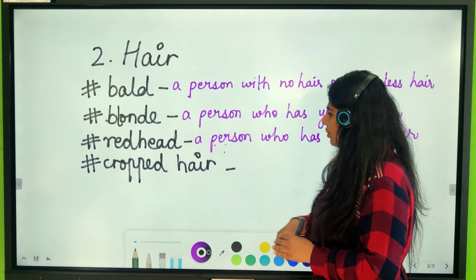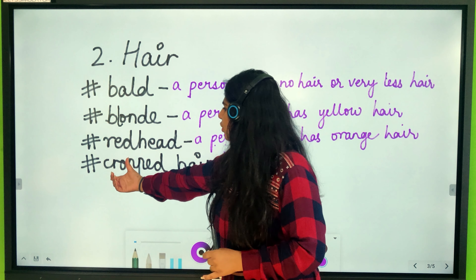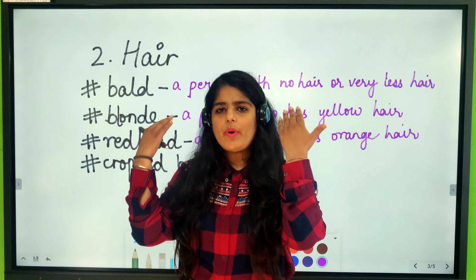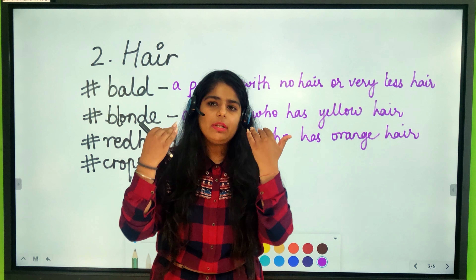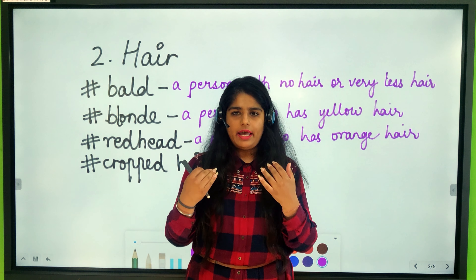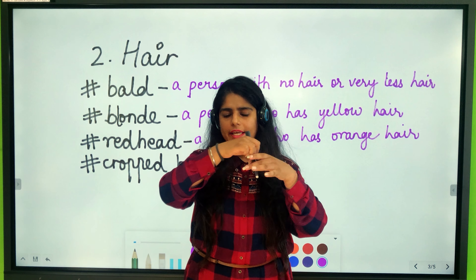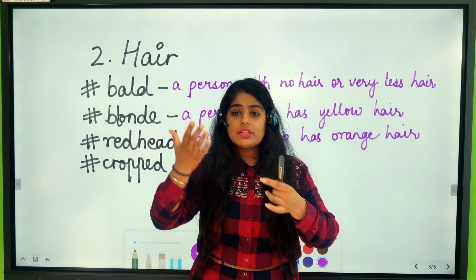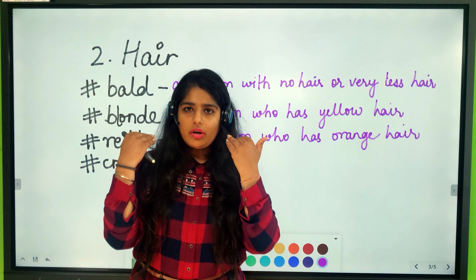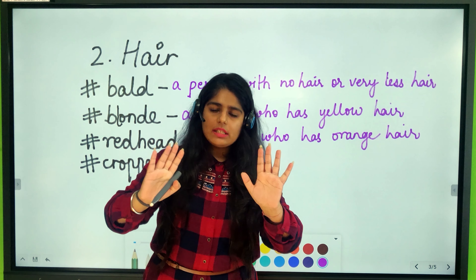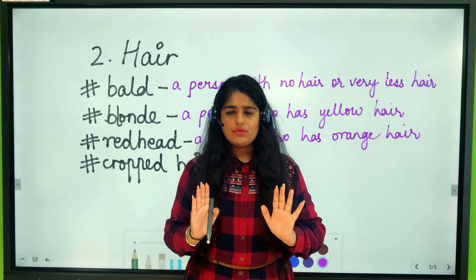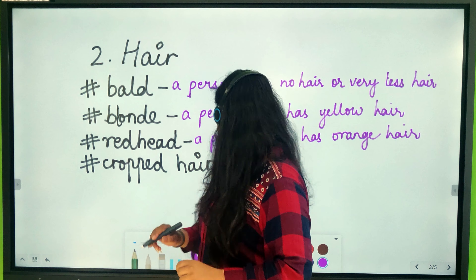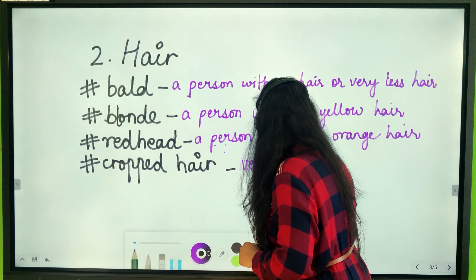Next is 'cropped hair,' which means very short hair — extremely short, not even to the shoulders, just very close to the head. Usually boys have short hair, but girls can also have cropped hair.